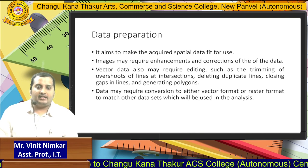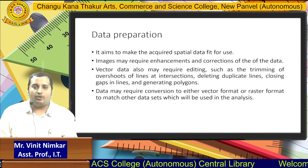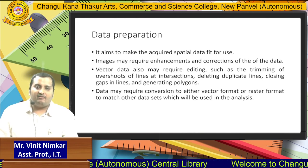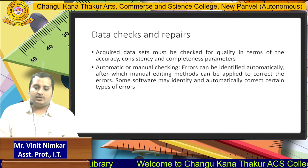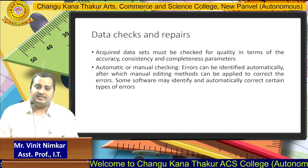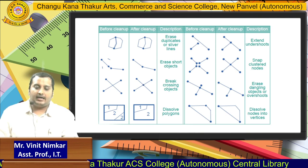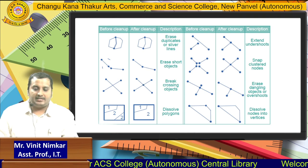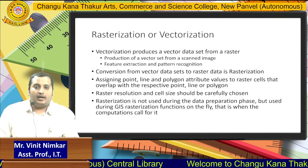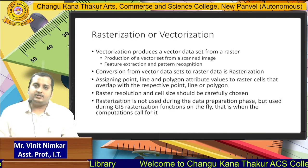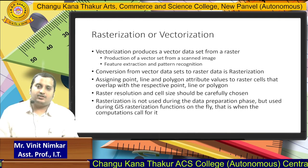Data preparation: when data is captured it should be fit for use. It should match your format, match your editing, should not have blurry lines, and should not contain irrelevant information. Data checks and repairs help us remove any errors still present in our system. As shown in the diagram, before and after cleanup, unwanted lines and so on are erased. Rasterization and vectorization are the two available processes — conversion of vector datasets into raster datasets is called rasterization, and the reverse is vectorization.